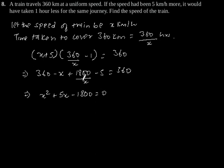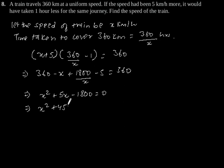Solving this equation, we get x squared plus 5x minus 1800 is equal to 0. Now splitting the middle term, we will get x squared plus 45x minus 40x minus 1800 is equal to 0.